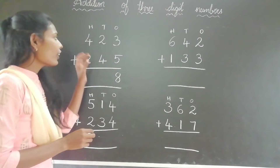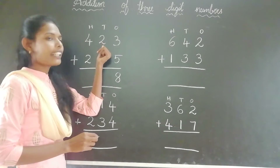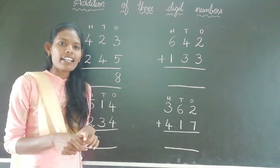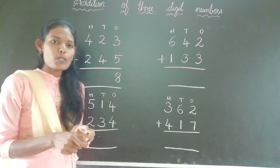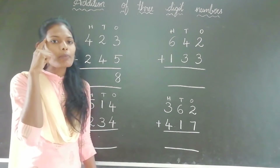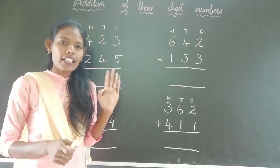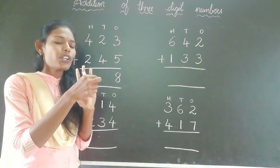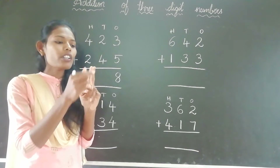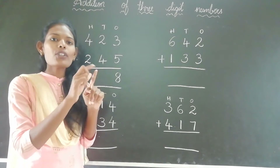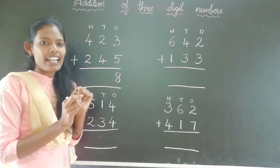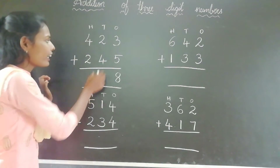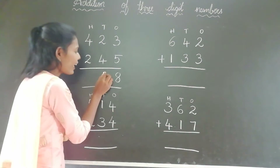Now, what is the tens place? 2 and 4 — these numbers are at the tens place. So keep 2 in your mind and take 4 fingers. What comes after 2? 3, 4, 5, 6. The answer is 6. Write it under the tens column.